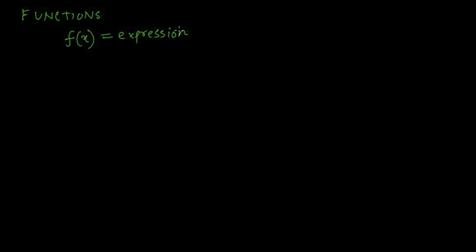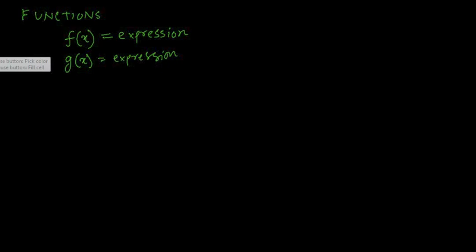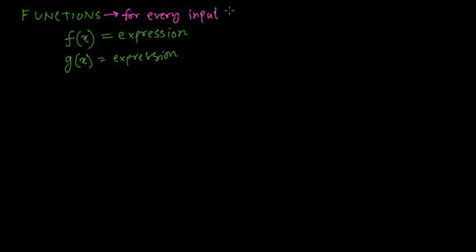This entire expression is put into this machine called a function, f(x). It can also be another alphabet, g(x) for a different expression, or h(x) for another expression. The formal definition of a function is that it is an expression such that for every input, there is a unique — meaning exactly one — output.